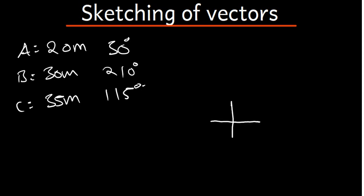I know that this is my north, this is my south, this is my east, and this is my west. So the first vector — I'm going to assume this is my origin, that is my starting point. The first vector starts from there all the way to 30 degrees, which is nearer to east than north. So I put it here. That is vector A, which is 20 meters, at 30 degrees.